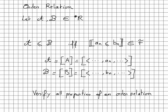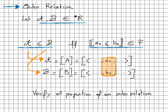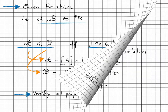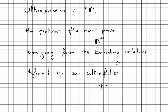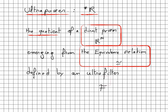On top of being a field, what we have here is an ordered field, which allows us for any curly-A and curly-B in star-R to say that curly-A ≤ curly-B if and only if the set of integers n such that a_n ≤ b_n belongs to the ultrafilter. In other words, we need a_n ≤ b_n almost everywhere. This fully defines what we call the ultrapower star-R — the quotient of the direct power R^N arising from the equivalence relation defined by an ultrafilter.